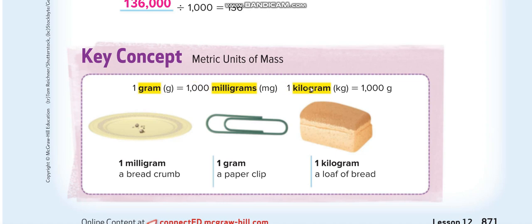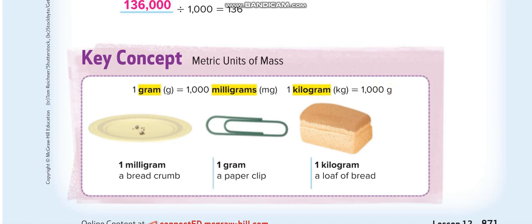One gram equals one thousand milligrams, and one kilogram equals one thousand grams. When converting from a larger unit to a smaller unit you multiply, and from a smaller to a larger unit you divide. So grams to milligrams: multiply by 1000; milligrams to grams: divide by 1000. Kilograms to grams: multiply by 1000; grams to kilograms: divide by 1000.